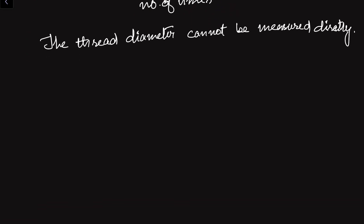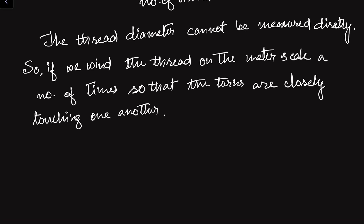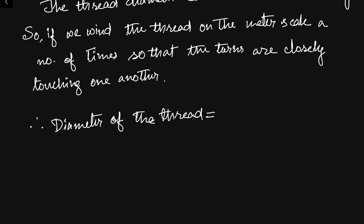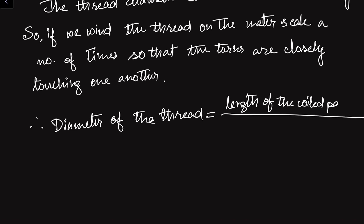If we wind the thread on the meter scale a number of times so that the turns are closely touching each other — each turn touching the next — after winding, the diameter of the thread can be measured using one simple formula. Therefore, the diameter of the thread equals the length of the coiled part divided by the number of turns.